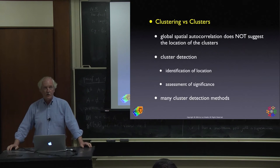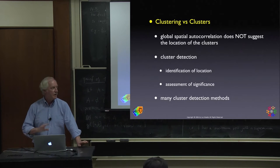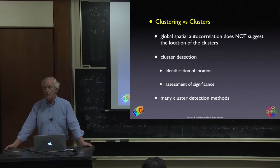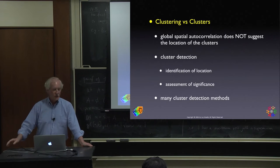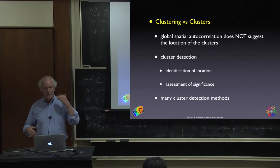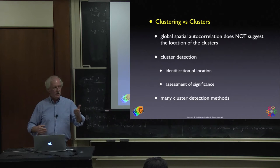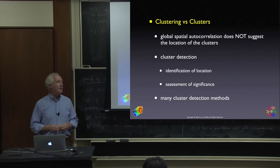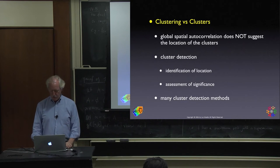The cluster detection literature is huge, much larger than I can cover in a single course, with many different detection methods — some based on statistics, some based on optimization techniques. The idea is always the same: we have to find the where, the location. In statistical approaches, we also want to assess the uncertainty of that decision and measure significance in a quantifiable way.